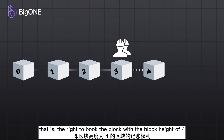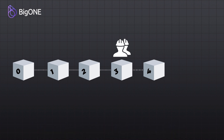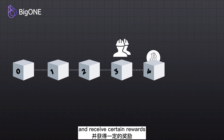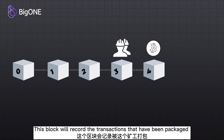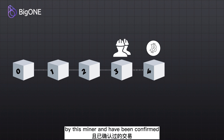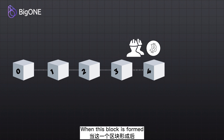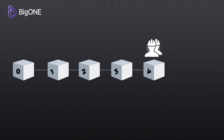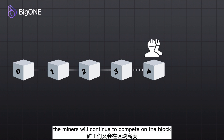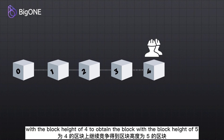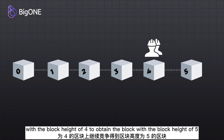That is the right to record the block with a block height of four, and receive certain rewards. This block will record the transactions that have been packaged by this miner and confirmed. When this block is formed, the miners will continue to compete on the block with block height of four to obtain the block with block height of five.